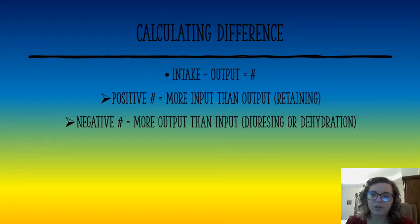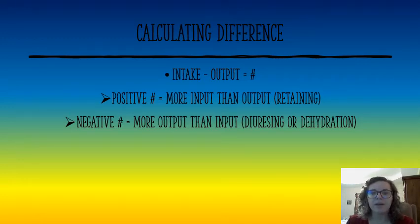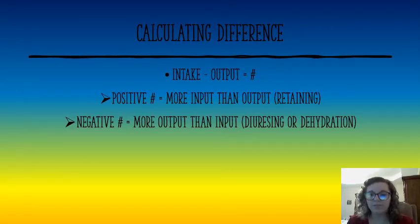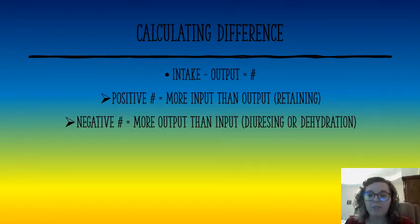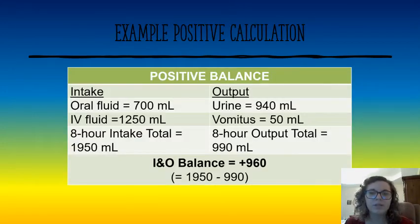A positive balance may indicate the patient is retaining fluid due to kidney problems, heart failure, or other reasons. If it's a negative number, that means there's more output than input — we need to look at whether that's intentional, such as when we're diuresing them with Lasix or furosemide, or whether we're at risk for dehydration.